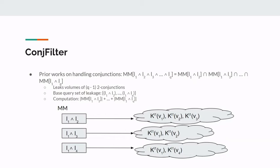Second, in terms of computation costs, the server must perform computation on the order of the sum of the sizes of the response sets from all two-way conjunctions. This seems quite wasteful, as the response set of MM(L1, L2) is already a superset of the final response.